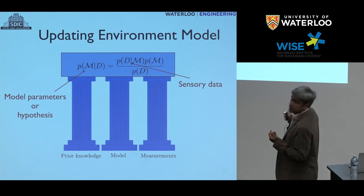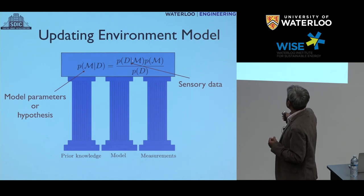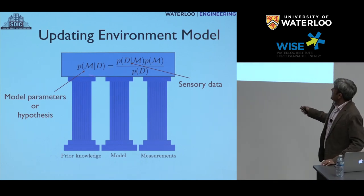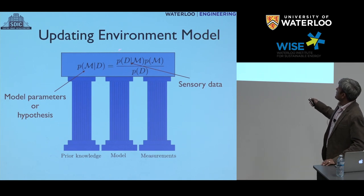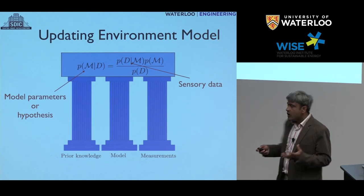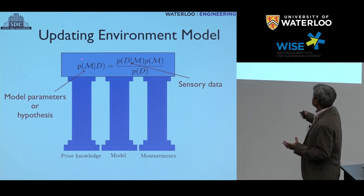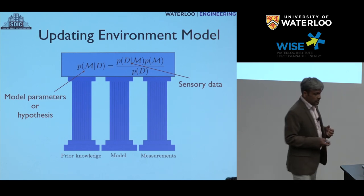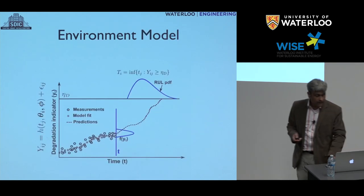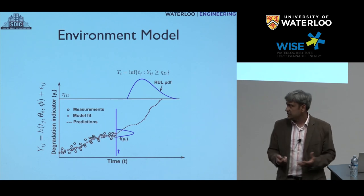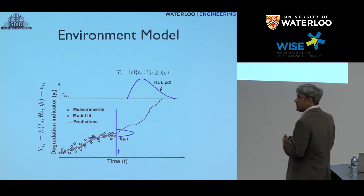The environment model could be mechanistic or data-driven. One of the most important components in what we do is updating the environment model. Think of it as three pillars: the environment model, some prior knowledge, and some measurements. Mathematically, all you're doing is calculating the model parameters conditioned on some hypothesis or some data you're observing. This is given by Bayes' theorem — the product of the likelihood of observing those values times the prior. If you're able to calculate the posterior from the prior knowledge and the data you're observing, mathematically your problem is solved.